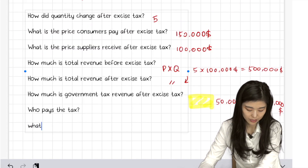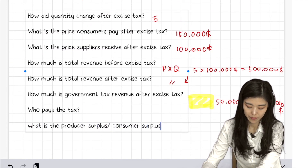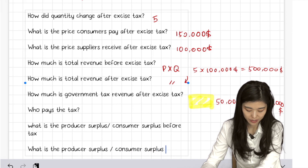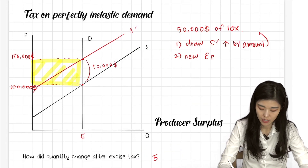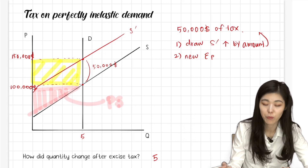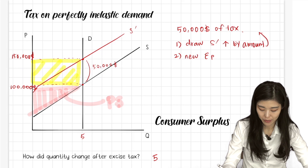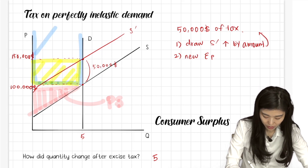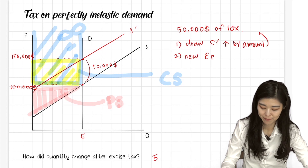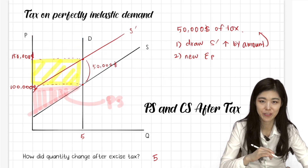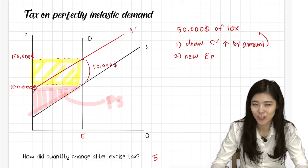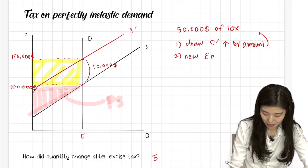They could also ask you: what is the producer surplus and consumer surplus before tax, and what is the producer surplus and consumer surplus after tax? Before tax, producer surplus is easy — up to the price, this is producer surplus before tax. And consumer surplus — what people get confused about is it goes on forever and ever, so it's unlimited. This is consumer surplus before tax. So what happens to producer surplus and consumer surplus after the tax? Producer surplus doesn't change because for the producers, the price hasn't changed. So producer surplus would still be the same as before.